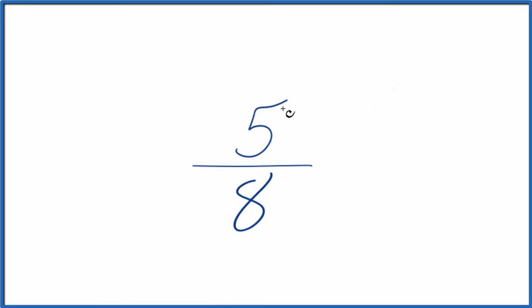Let's write some equivalent ratios for 5 eighths. So here's how we do that. We could multiply the numerator and the denominator by the same number.